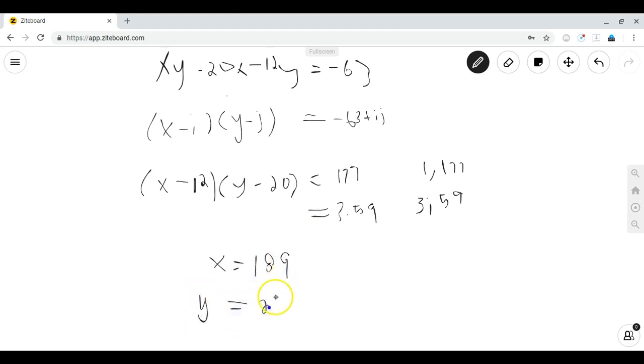So we have the LCM of a, b is equal to 189 and the GCD of a, b is equal to 21. Since the GCD of a, b equals 21, we can let a equals 21 a prime, since it has to be divisible by 21, and b equals 21 b prime.